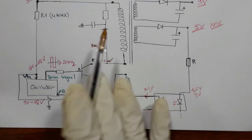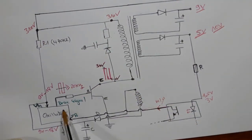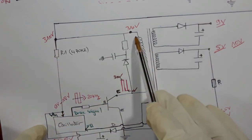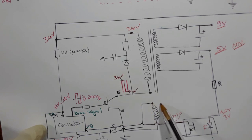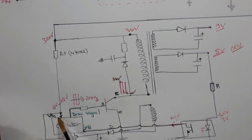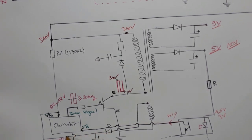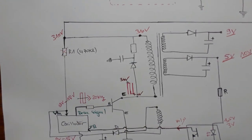There is also a start resistor: normally the oscillator is powered for the first time through this resistor. But once all operations are running, a dedicated coil on the transformer charges up and powers the oscillator through a diode and filtering capacitor, providing 9 to 18 volts. At this point the start resistor stops working.